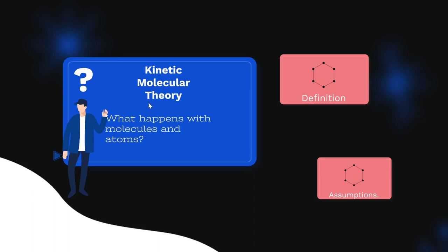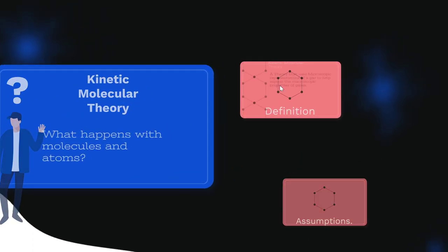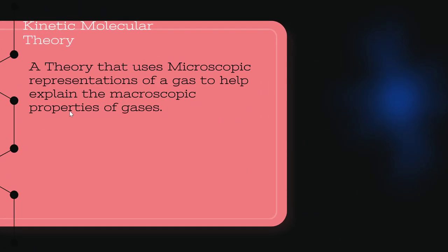Kinetic molecular theory — we're going to go into detail about what happens with molecules and atoms. We'll go over the definition and then some assumptions. Our definition is that it's a theory that uses microscopic representations of a gas to help explain the macroscopic properties of the gas.